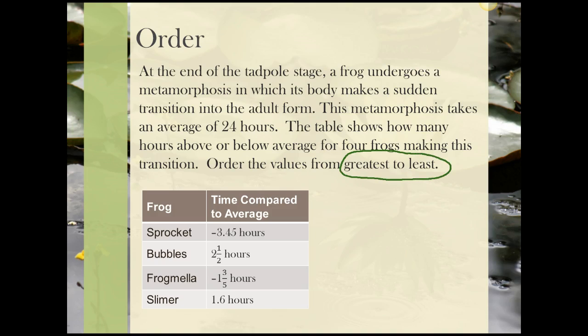If we take a look at our values, we have two that are positive and two that are negative. We're going from greatest to least, so let's pick out the positive values first. We have 2 1/2 hours, and we have 1.6 hours. 2 1/2 hours is greatest, so that will go first, and that will be followed by 1.6. It's very easy to compare when they have different whole numbers. Next, let's take a look at the negative values, -1 3/5, and -3.45. -1 3/5 is just on the other side of zero, so that is going to be the third largest value, and finally, the smallest value of the group is going to be -3.45 hours.